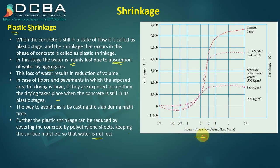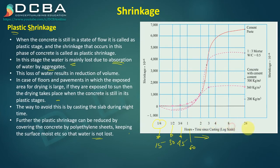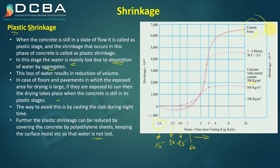This graph shows how much shrinkage can happen after casting, from 15 minutes up to 24 hours. The shrinkage will depend on the structure being inspected — whether it is just a cement paste, a mortar (cement-sand mixture), or a concrete (cement-sand-aggregate mixture) with cement content of 500, 360, or 200 kg per cubic meter. Most shrinkage happens for pure cement paste, where at around three hours from casting there is a significant amount of shrinkage.